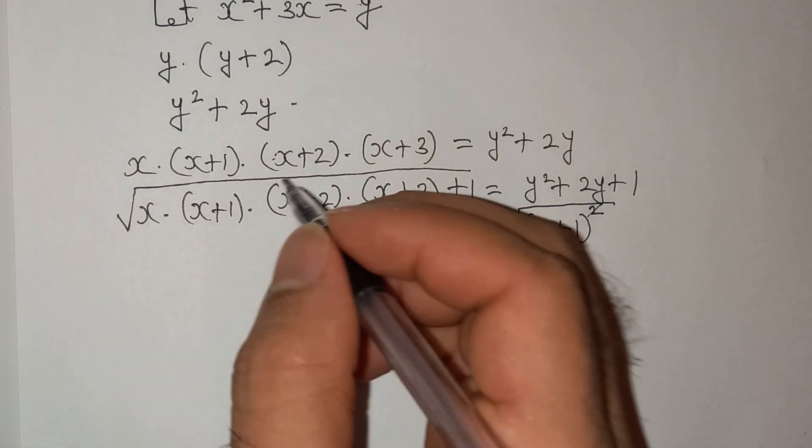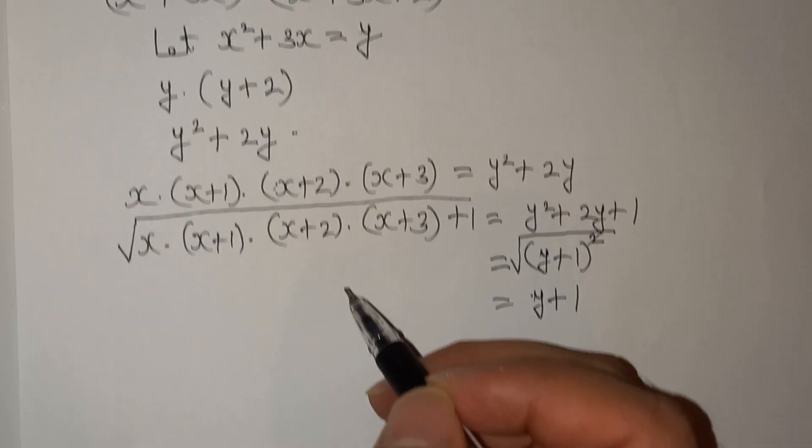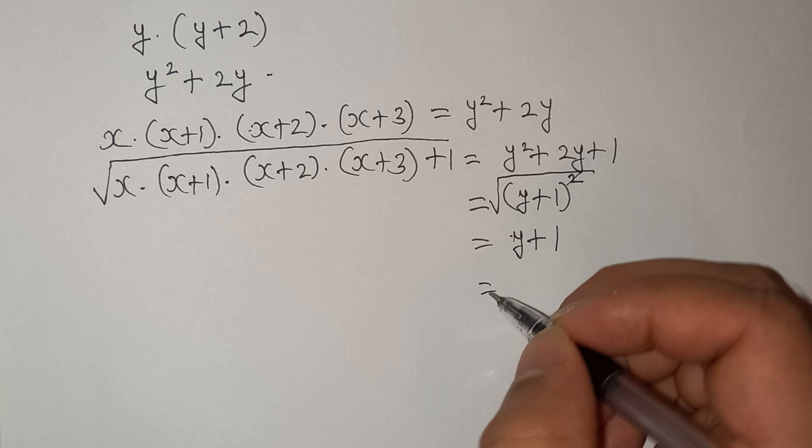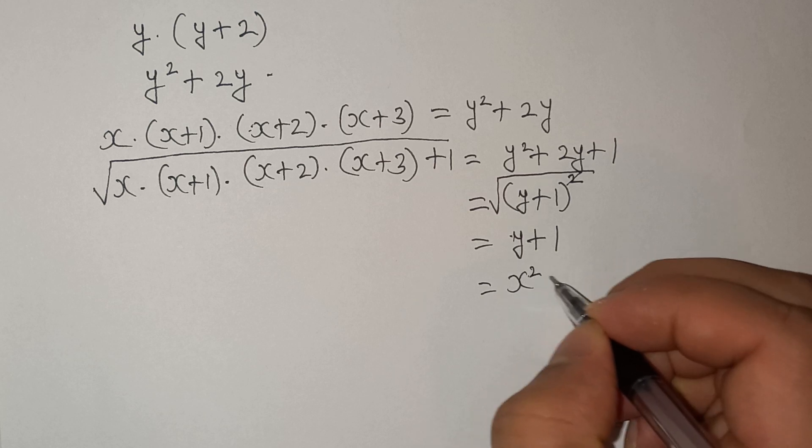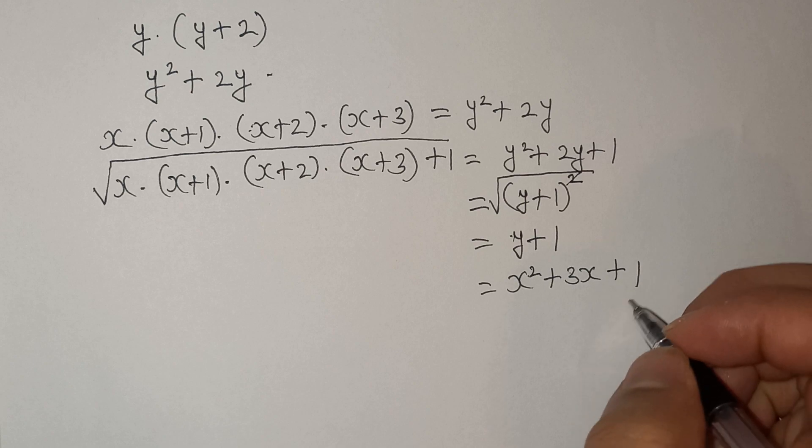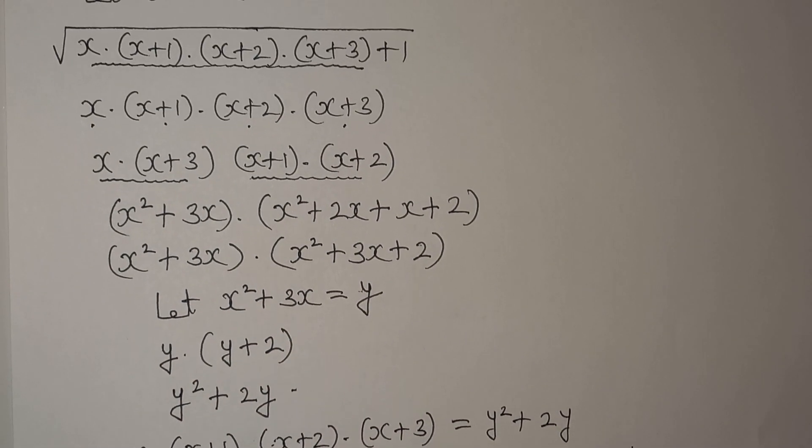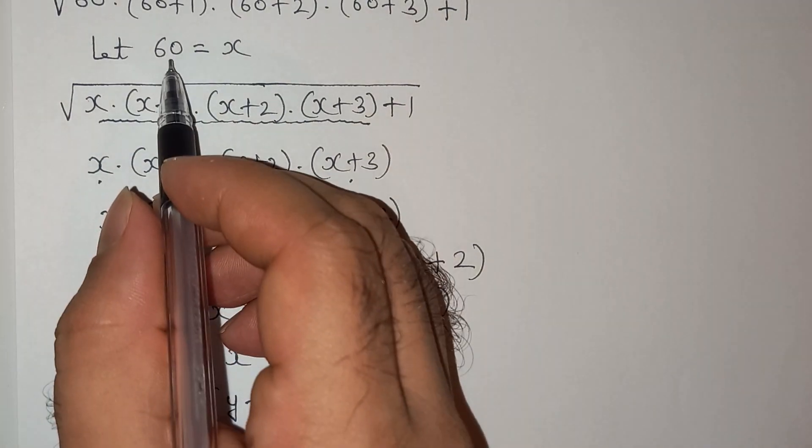Now as you remember, the value of y is x² + 3x. So we can write x² + 3x + 1, and the value of x we had assumed initially was 60.